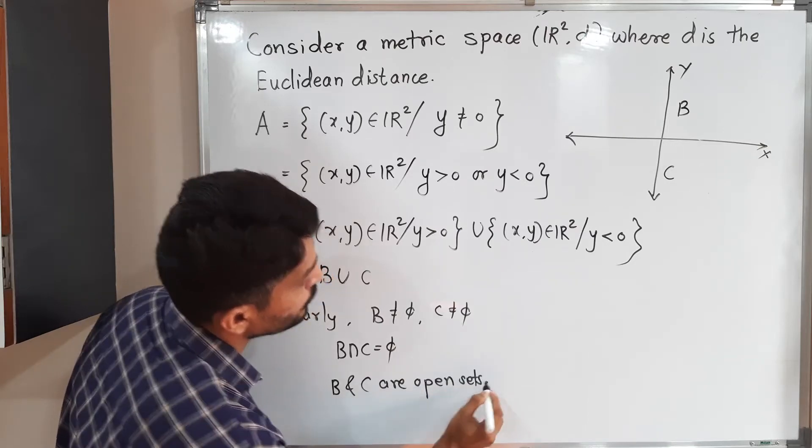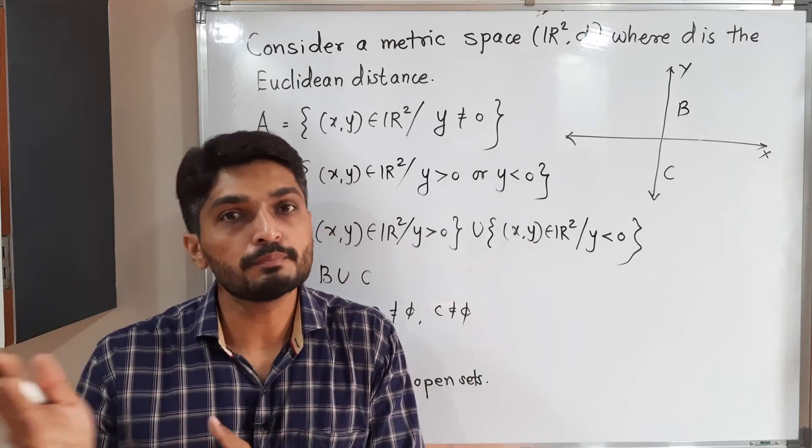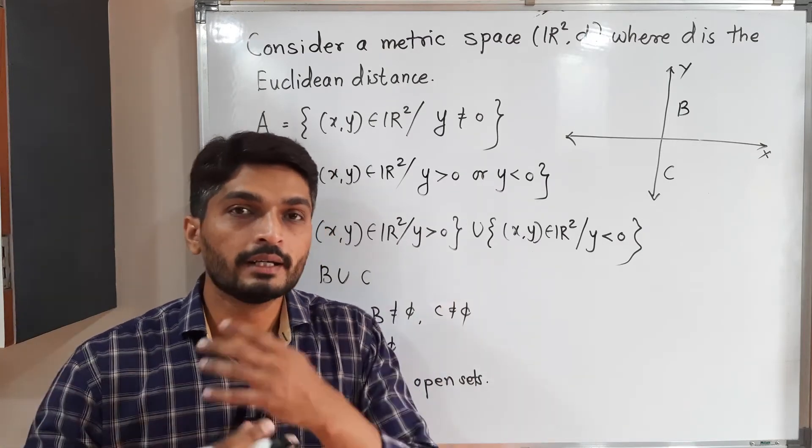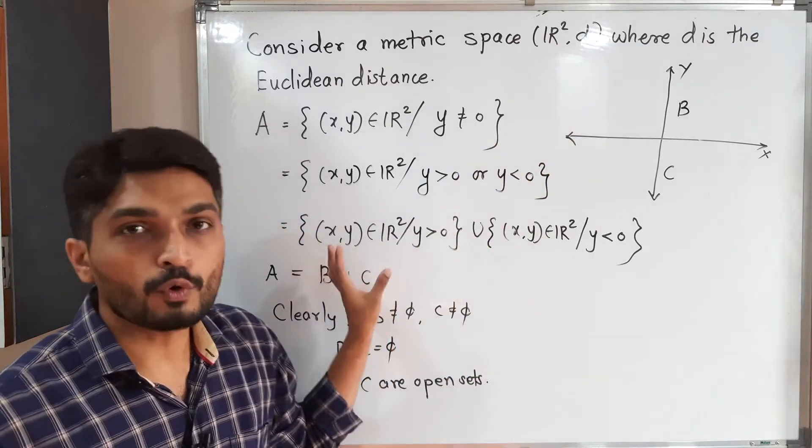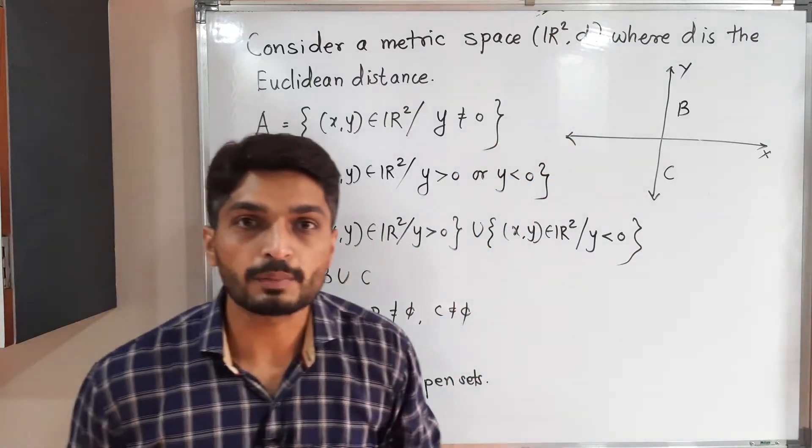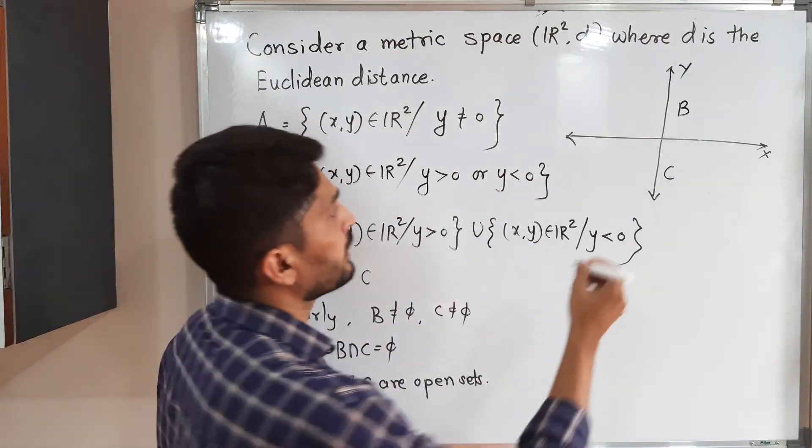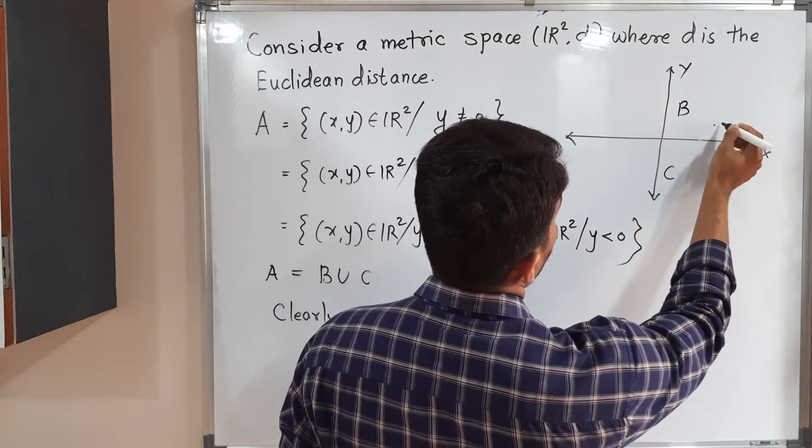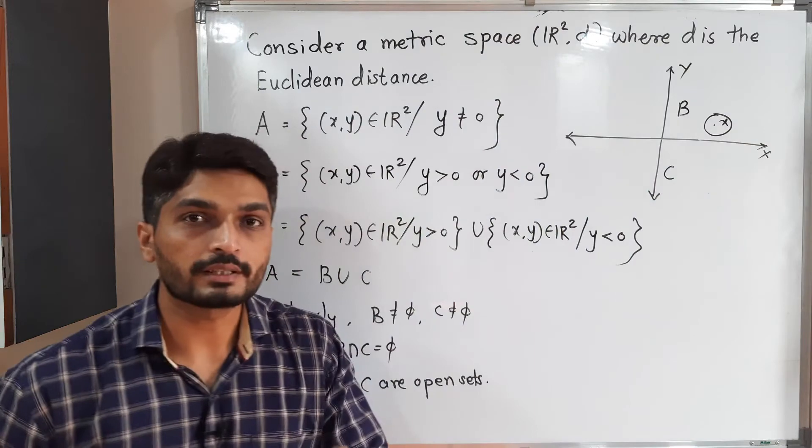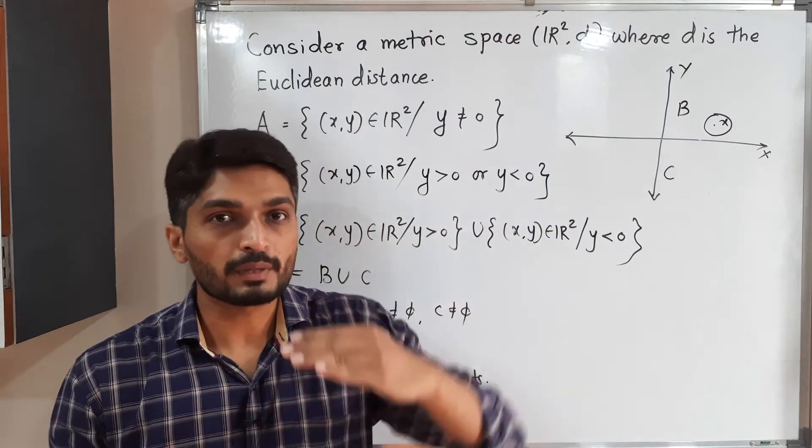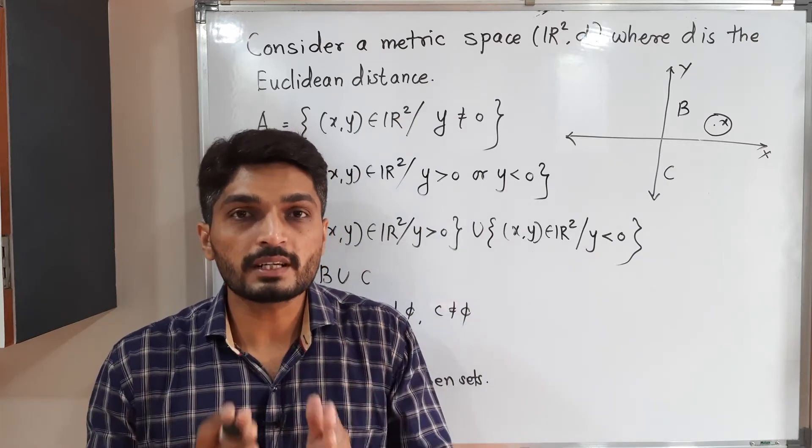B and C are open sets. All these things we have already done in previous semesters. The upper half of the plane is an open set. To show any set is open, you can take any arbitrary point and draw an open ball around it. If you take any point in B, definitely you can find a ball around B which entirely lies inside set B. In this way, we can say the upper half of the plane is an open set and the lower half of the plane is an open set.